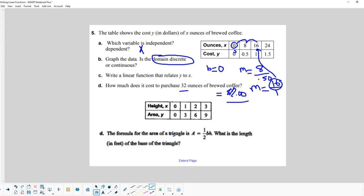All right. So our next one, the formula for the area of a triangle A is equal to 1/2 B times the height. 1/2 the base times the height. What is the length in feet of the base of the triangle? So what's the height, what is the length in feet of the base of the triangle? So 1/2 the base times the height. What is the length of the base? Okay. So let's take a look.